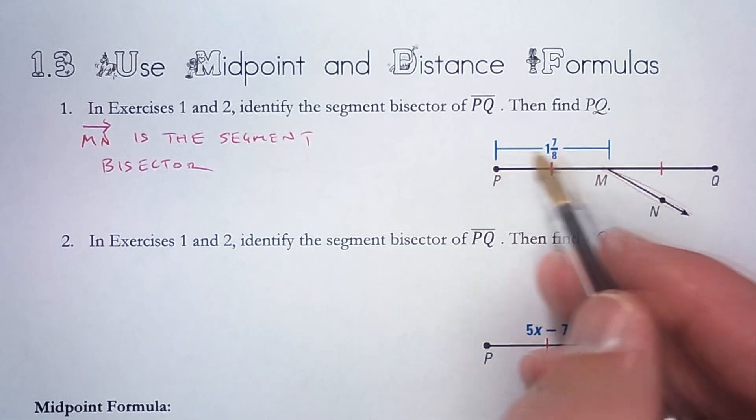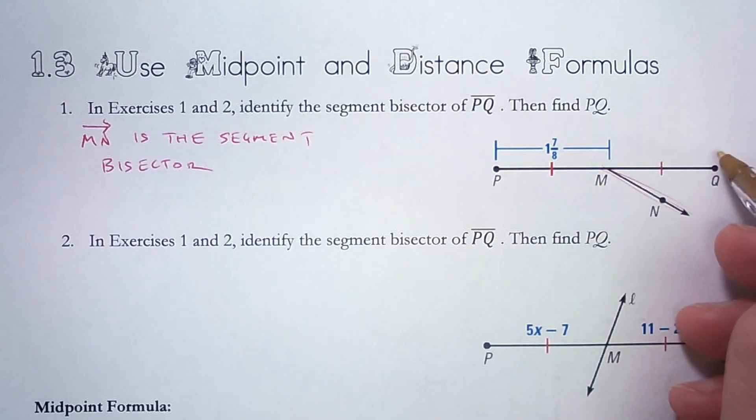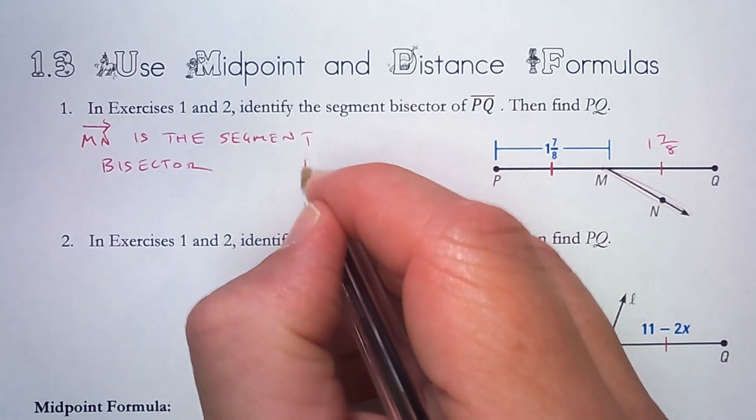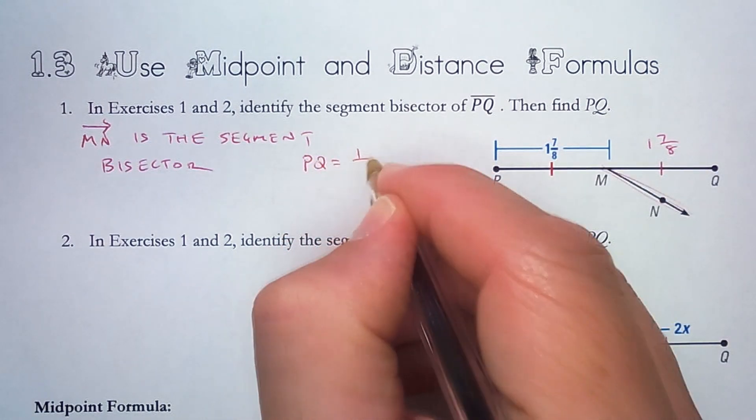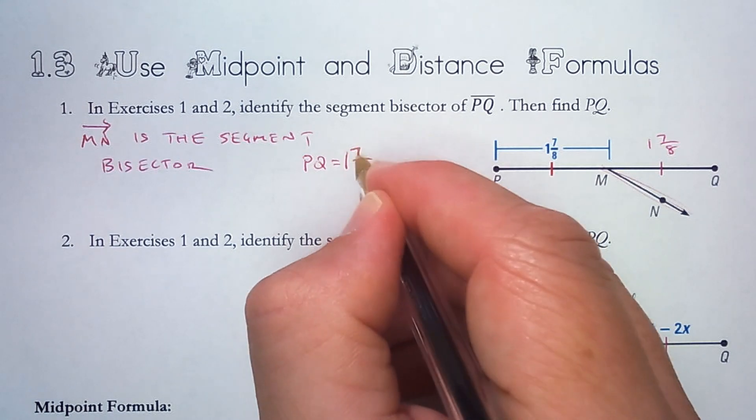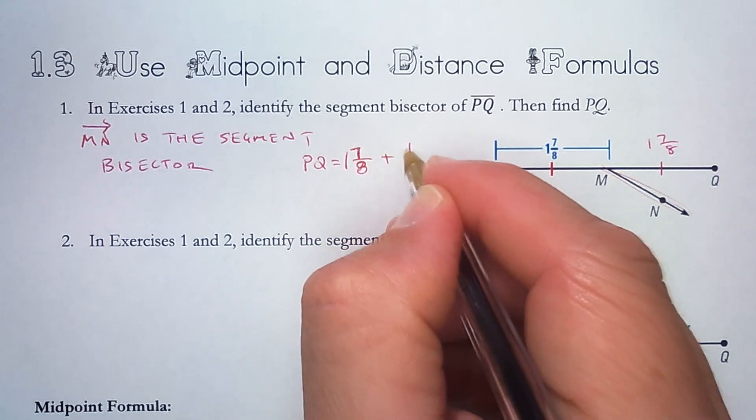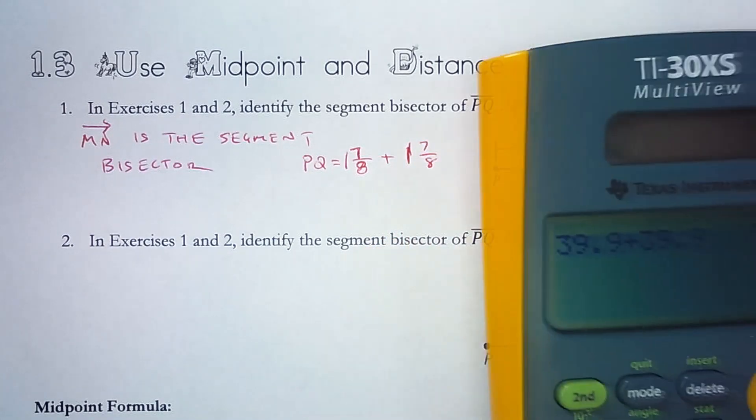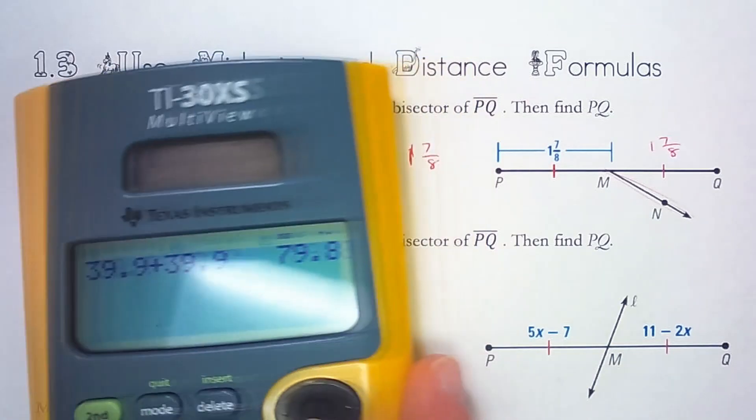So if 1 and 7 eighths is the length here of PM, then QM is also 1 and 7 eighths. So I can add those two together. So PQ is 1 and 7 eighths plus 1 and 7 eighths. Now I can do that on this calculator.